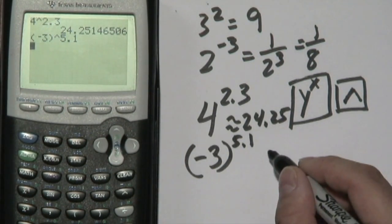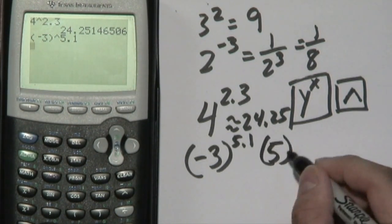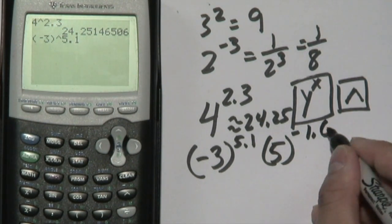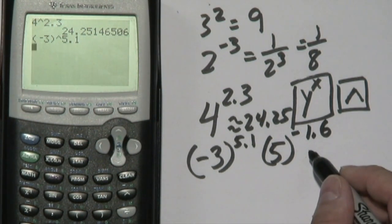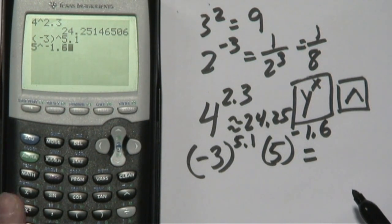So let's try another example here. Suppose you have 5 to, let's just say the negative 1.6. Now, you know you're going to get some kind of an answer because the base is not negative. So you have 5, and then caret, and then negative 1.6, just like that.